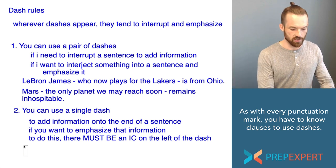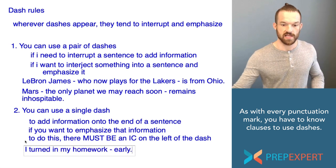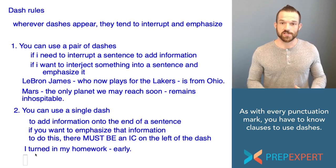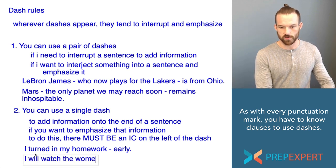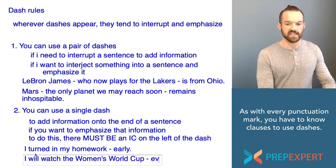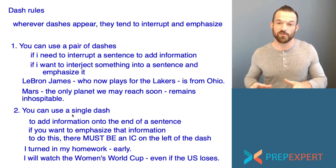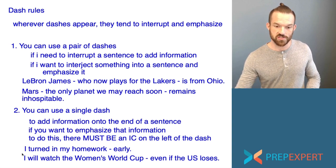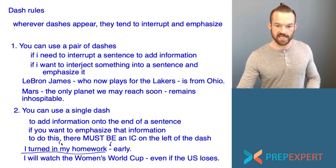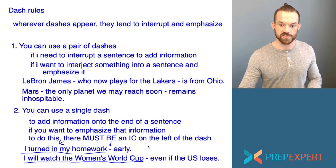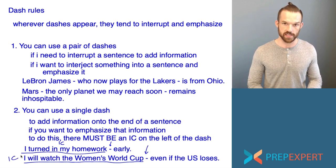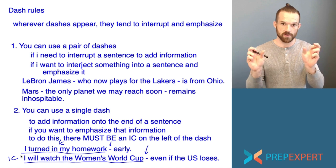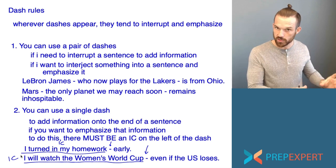For instance, I might say: 'I turned in my homework early — early.' Or: 'I will watch the Women's World Cup — even if the U.S. loses.' In each case, what is on the left side of the single dash is an independent clause — a complete sentence unto itself. That is the only time you can use a single dash to add information onto the end of a sentence. In summary: you can interrupt a sentence to add or interject information with a pair of dashes, and you can add information onto the end of an already complete sentence with a single dash, as long as there is an independent clause on its left.